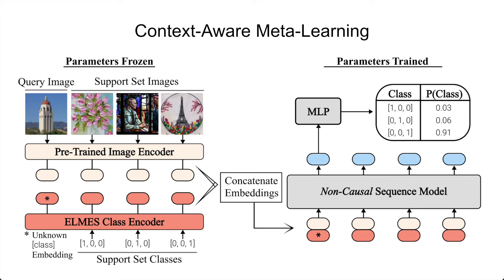Our approach tries to find the middle ground between extremely fast meta-learning algorithms and those that are general. We want to classify images in a single forward pass without doing any backpropagation, but we also want the model to be extremely general — it should be able to dynamically adapt to new classification paradigms within its forward pass. We want the model to recognize the visual characteristics a human would index on to classify a given support set and query image pairing.